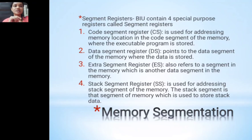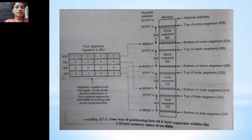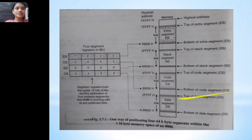The stack segment register is used for stack operations. In the memory diagram, the bottom of the data segment starts at address 24000H, with a total of 64K of data, and the top is at 2FFFFH. The whole memory of the 8086 is divided into small segments: data segment (64K), code segment (64K), stack segment, and extra segment, up to the highest address.